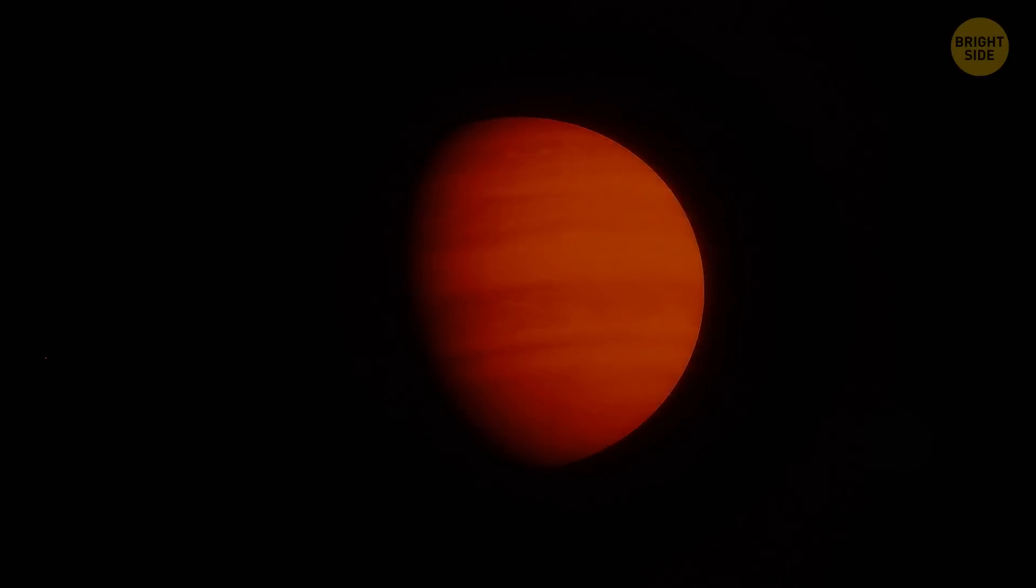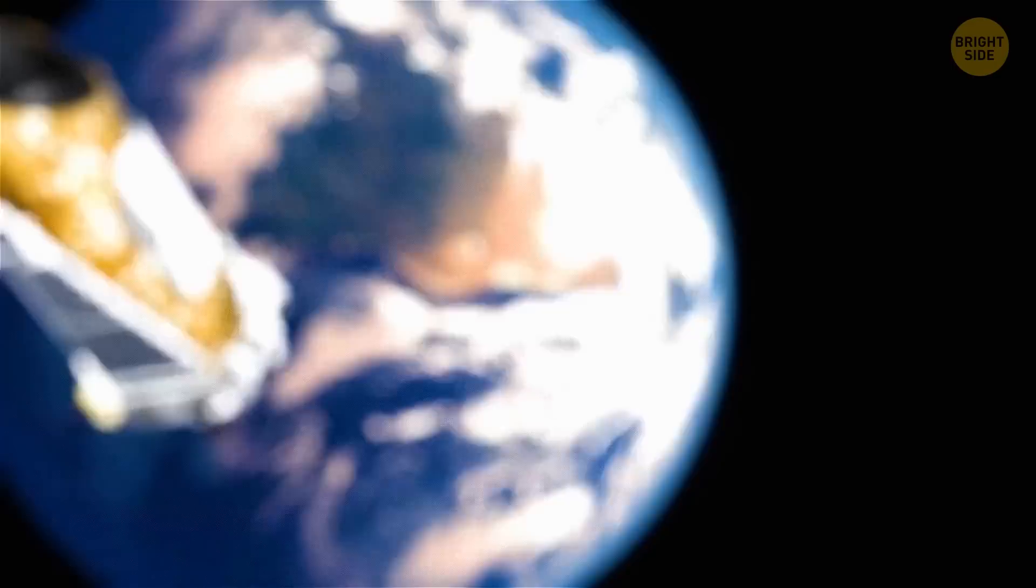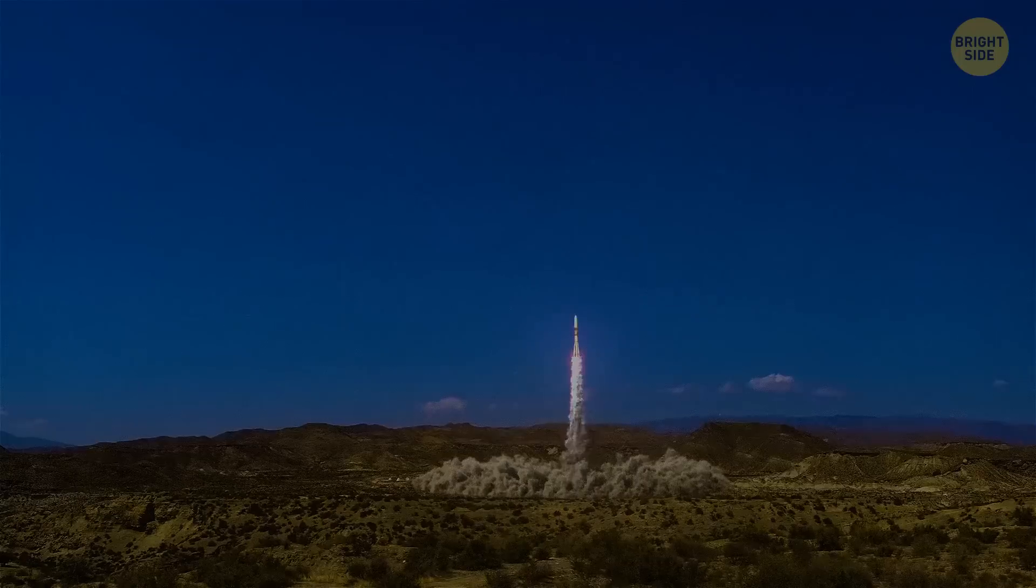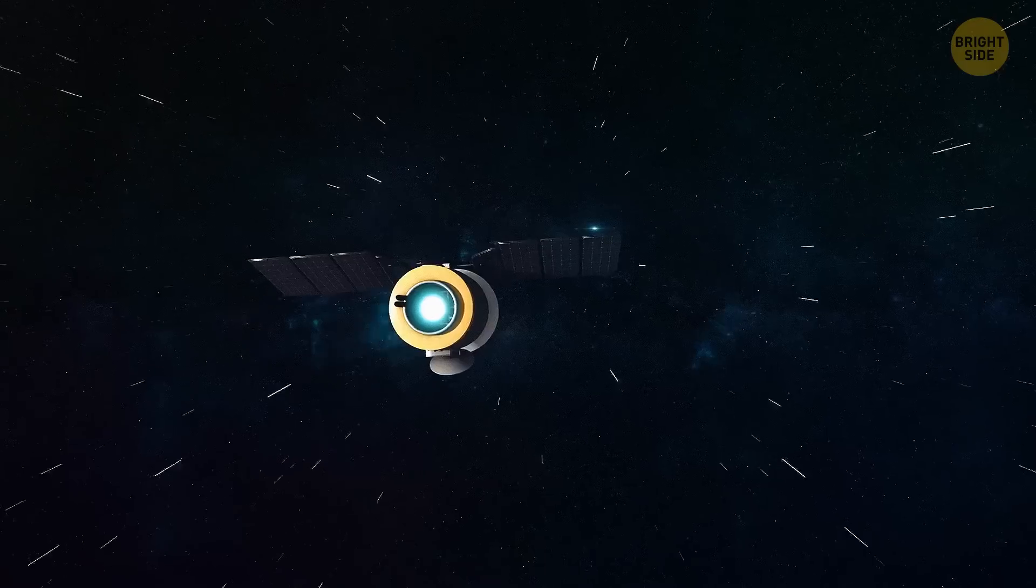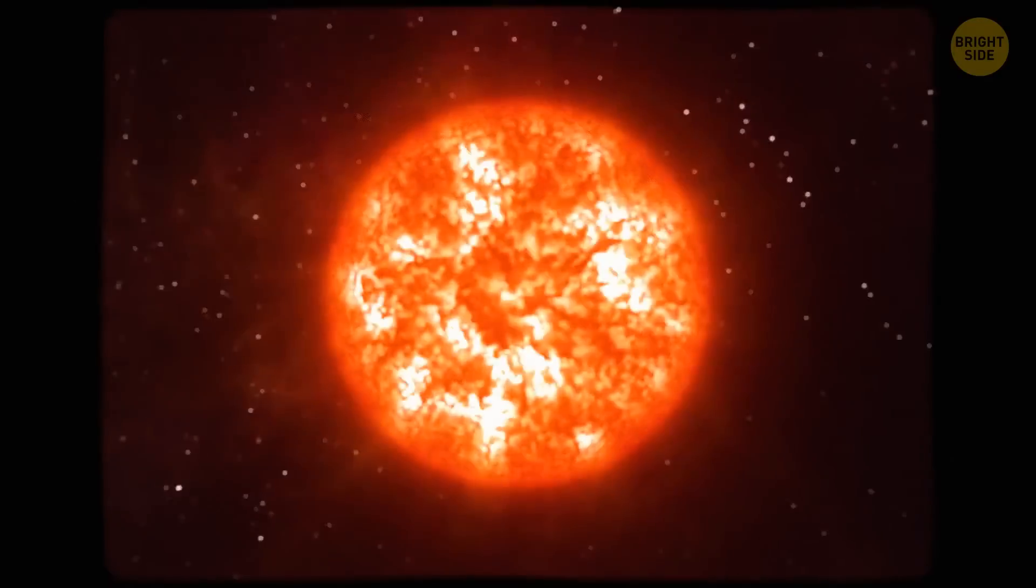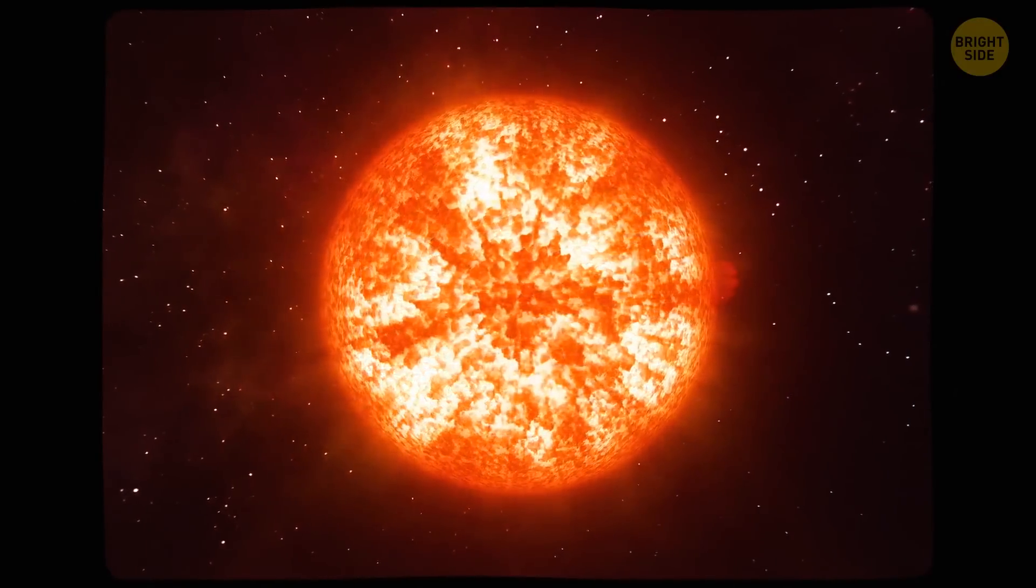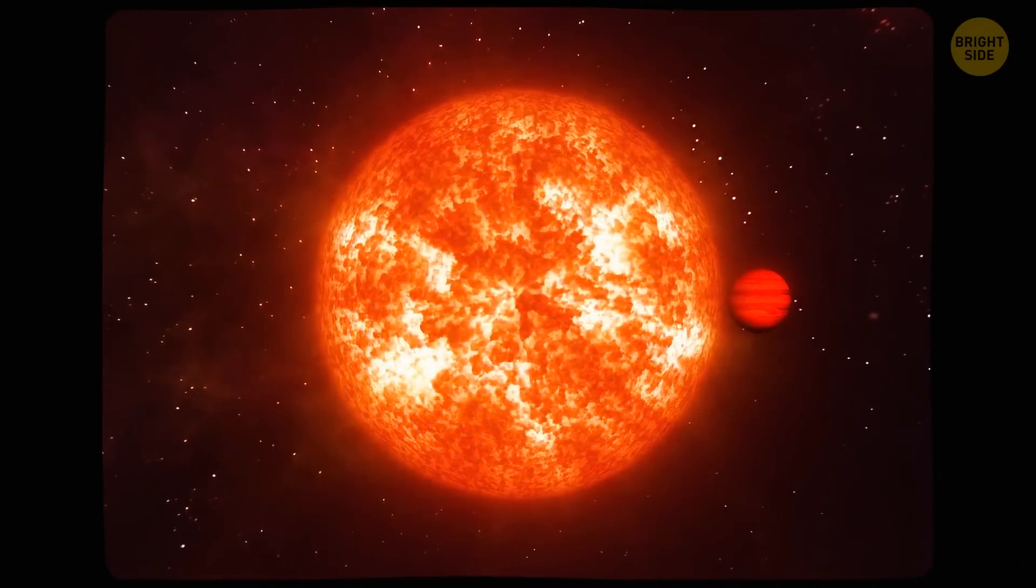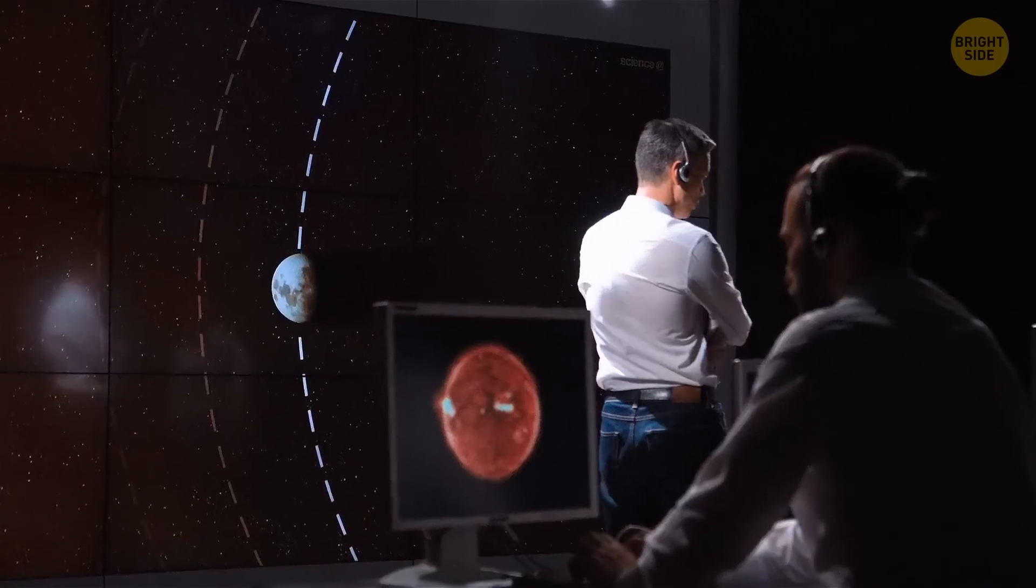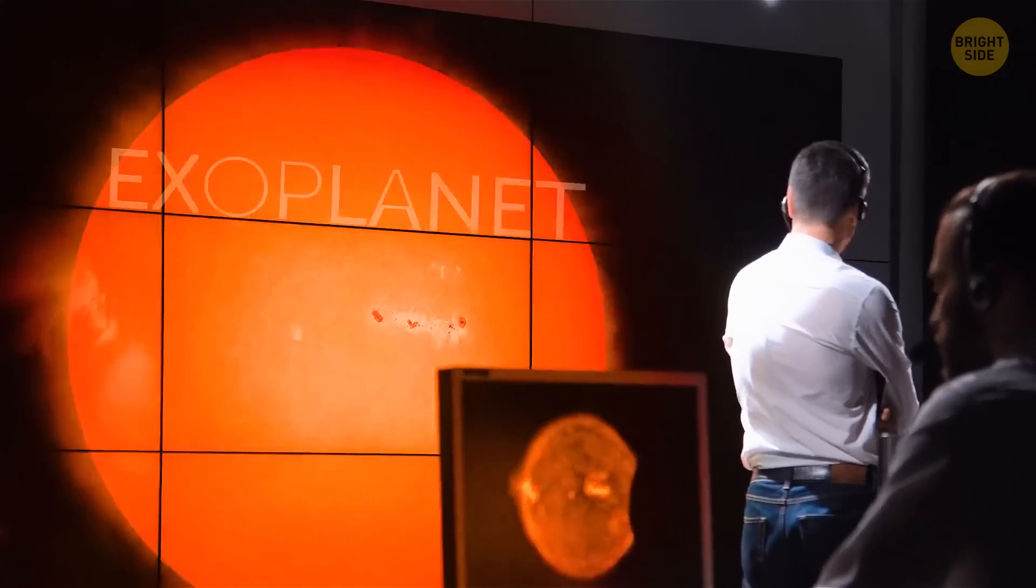But let me tell you a bit more about the doomed planet. It was discovered by NASA's now-retired Kepler Space Telescope. It was launched in 2009, and its mission was to find planets orbiting other stars, aka exoplanets. And the very first exoplanet the telescope spotted was the very gas giant we've been talking about. But it took astronomers about a decade to confirm that this space object was indeed an exoplanet.